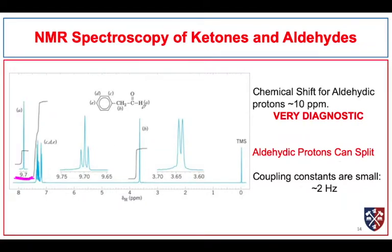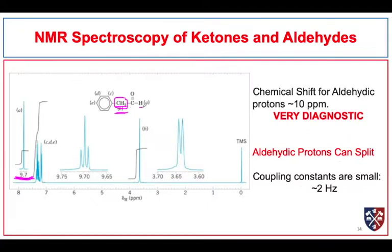In the proton NMR for aldehydes, we look for an absorption close to 10 ppm — in this case at 9.7, just as expected. We also look for an absorption from the protons on the CH₂ alpha to the carbonyl group, which we expect past about 2 ppm. In this example it appears even further downfield because it is next to both a carbonyl and an aromatic ring. This CH₂ shows a doublet with a very small coupling constant of about 2 Hz due to coupling with the aldehydic proton.